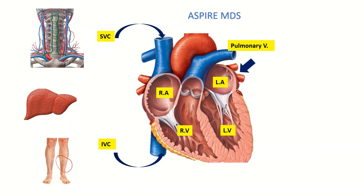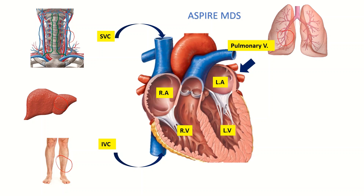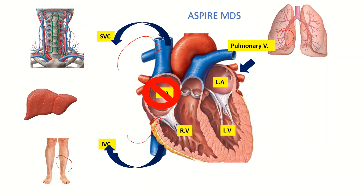The left side of the heart receives blood from the pulmonary vein, which drains blood from the lungs to the left side of the heart. In right-sided heart failure, the blood coming into the right side of the heart is no longer able to pass through it, and ultimately it gets reverted back to the organs from which it was coming — the blood gets congested and accumulated in those organs.